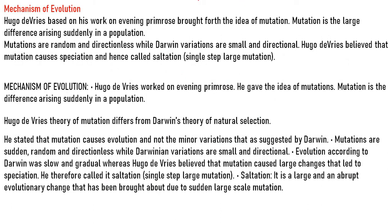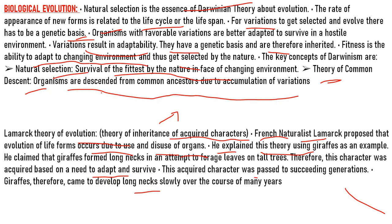Regarding the mechanism of evolution, Hugo de Vries, based on his work on the evening primrose, brought forth the idea of mutation. Mutation is a large difference arising suddenly in a population. Mutations are random and directionless, while Darwinian variations are small and directional. Hugo de Vries believed that mutation causes speciation, and hence called it saltation — a single-step large mutation.